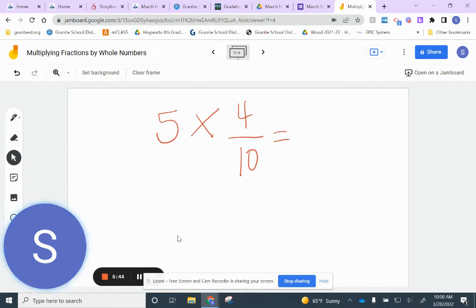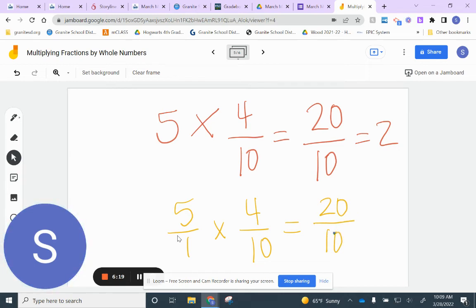So, you came up with twenty tenths. This one's interesting. If I know that a fraction is a division problem, I can do twenty divided by ten. Twenty divided by ten is two. Okay? Or, you could have come to this conclusion, if five over one times four over ten equals twenty tenths. Or it still equals two. So, if you answered with twenty tenths or two, you did a great job and got the correct answer.